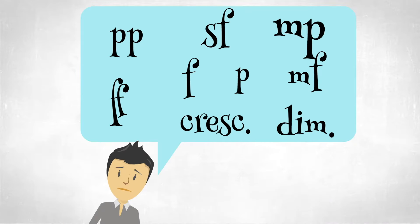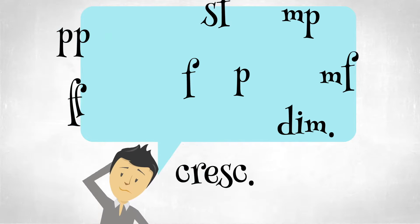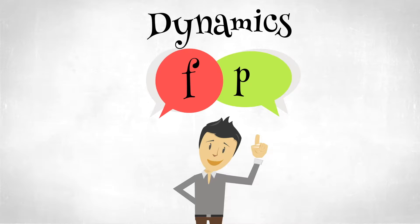There are a bunch of symbols that we have in music that involve loud and soft. But today, we will focus on the two most basic dynamic markings in music, the letter F and P.